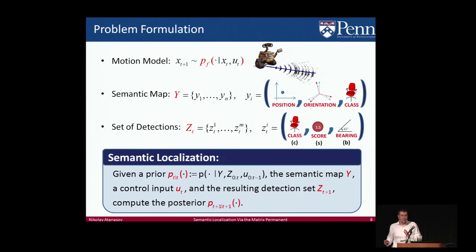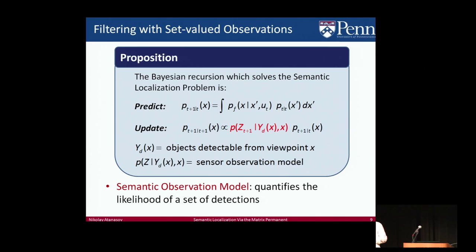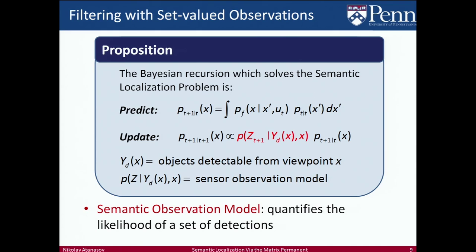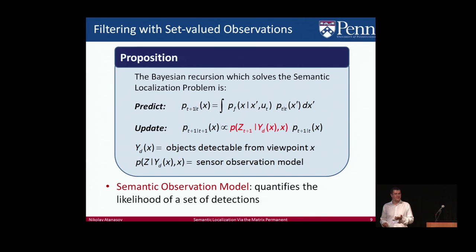Given that this is a filtering problem, it's natural to approach it from a Bayesian estimation point of view. The Bayes filter recursion solving this problem consists of two standard steps: prediction and update. The prediction uses the motion model and control to update the distribution over robot poses, and the update step incorporates the measurement information. The one exception compared to the traditional approach is that instead of a vector representation for observations, we now have a set. The first challenge is the modeling problem: we need an observation model quantifying the likelihood of a set of detections.